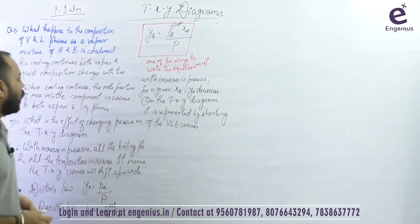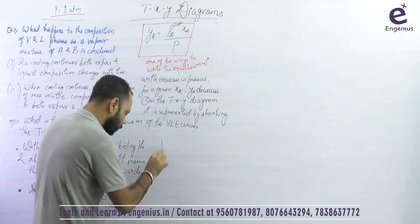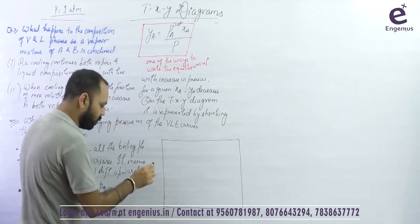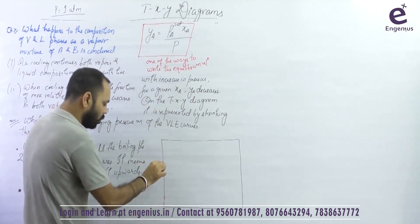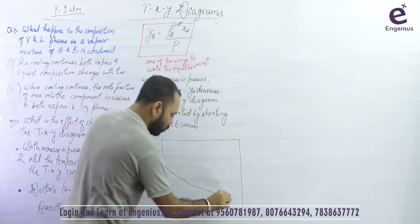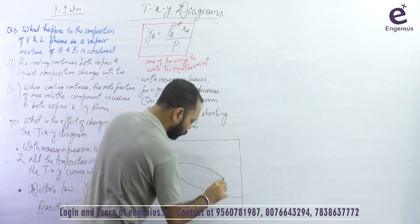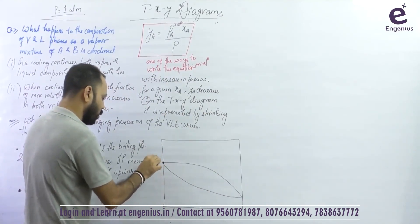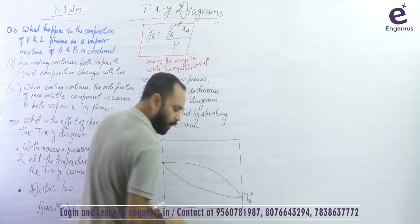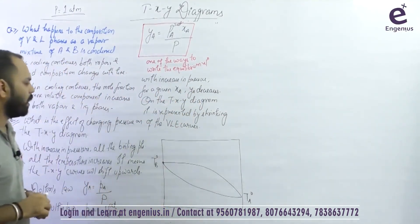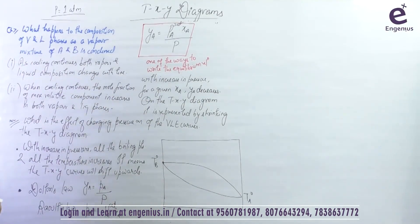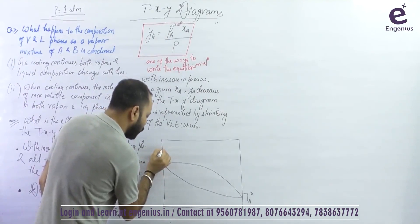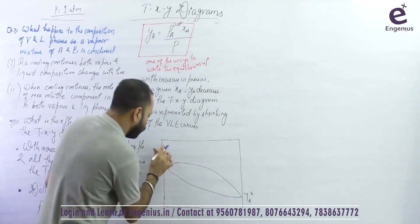Let me draw it graphically to show both effects on the same diagram with the same axes. Initially, this was the VLE curve, with T_B0 and T_A0 at a given pressure. Now as I increase the pressure, all boiling points increase so the graph shifts upwards, and simultaneously the curve shrinks. At higher pressure, the T-X-Y diagram is shifted up and the two-phase region is narrower.